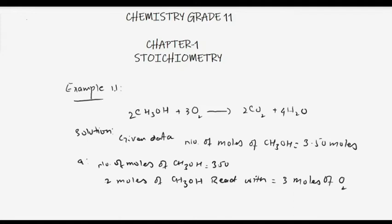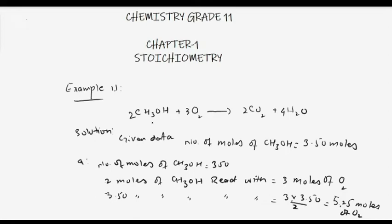From the balanced equation, 2 moles of methanol react with 3 moles of oxygen to produce carbon dioxide and water. If we have 3.50 moles of methanol, we calculate how many moles of oxygen are needed: (3 × 3.50) / 2 = 5.25 moles of oxygen. So 3.50 moles of methanol will react with 5.25 moles of oxygen.